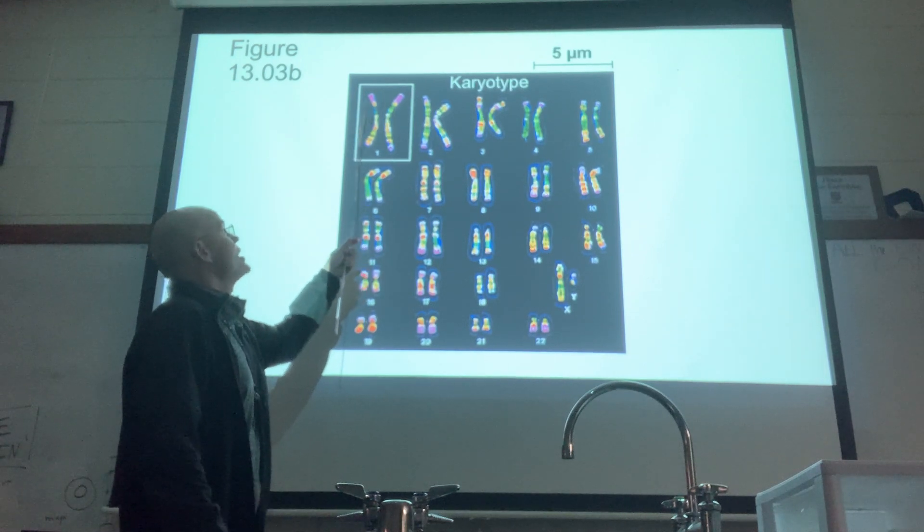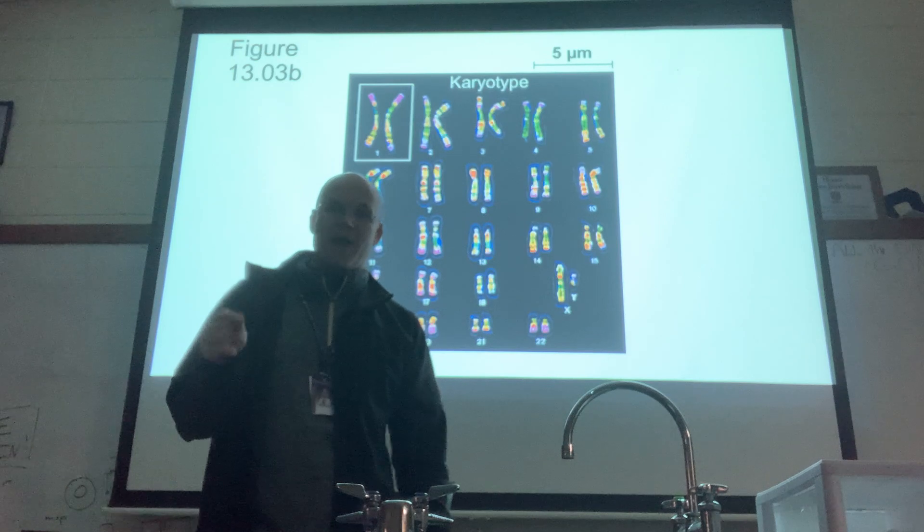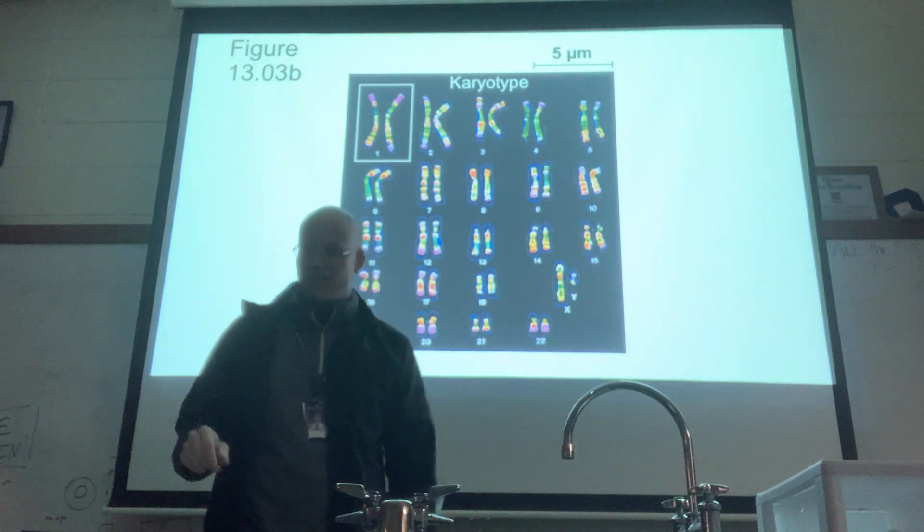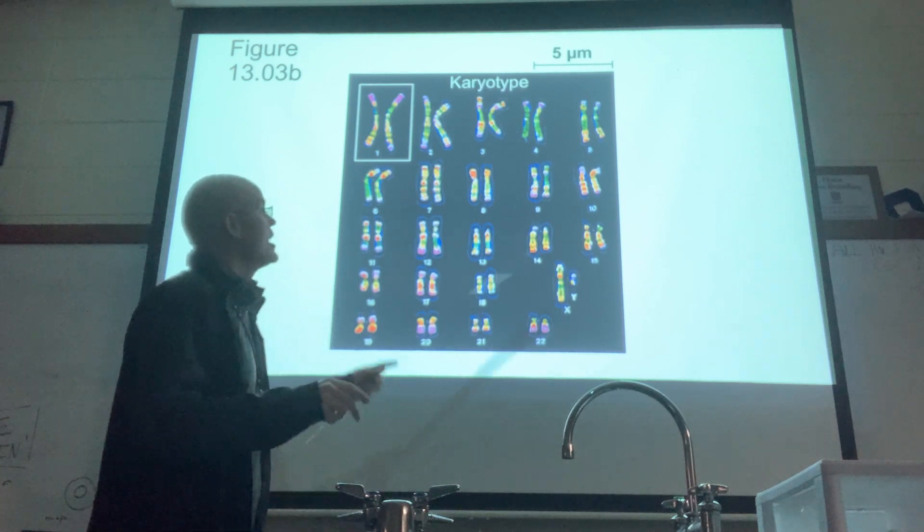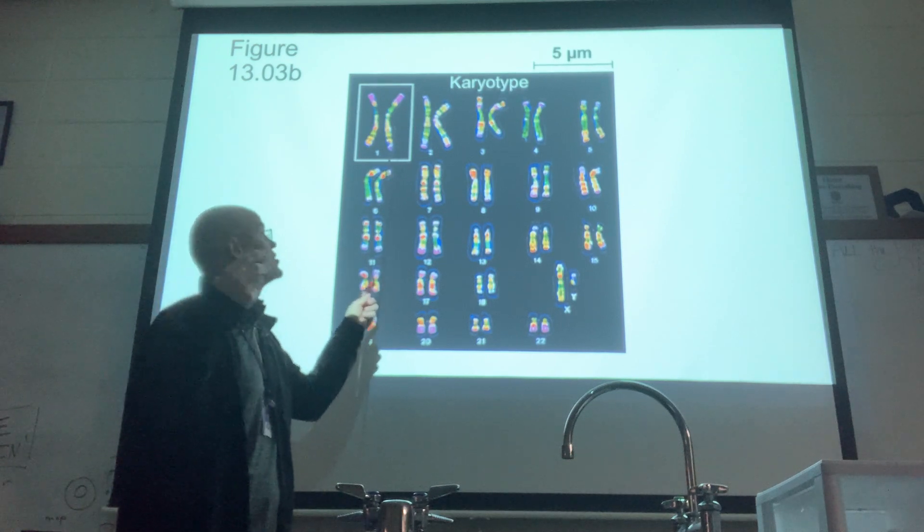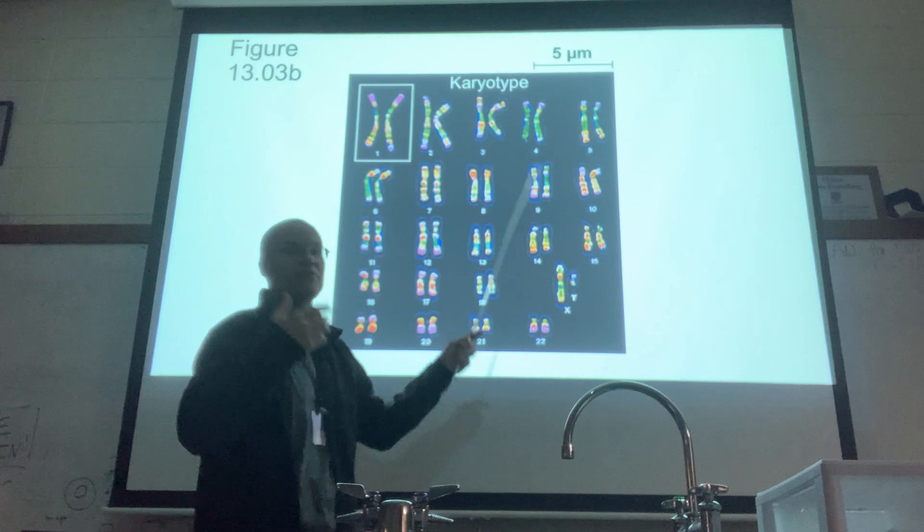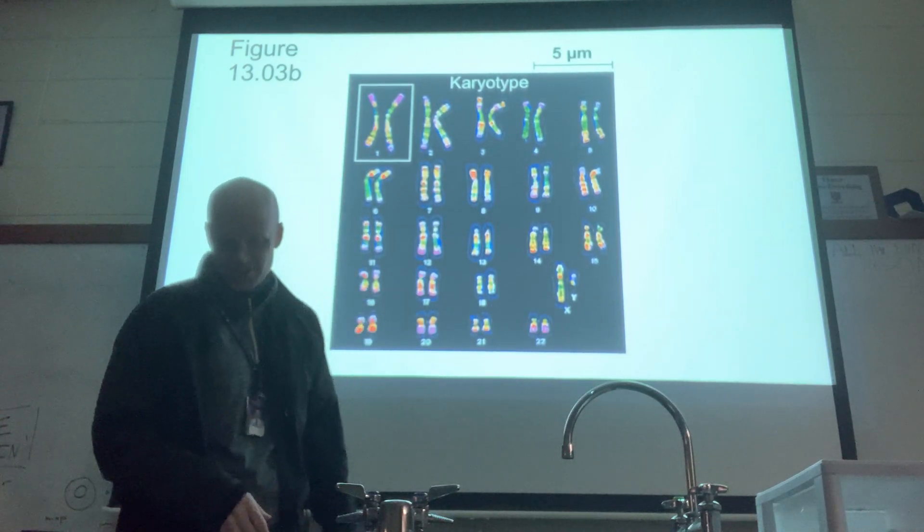You have matching pairs of chromosomes. We call matching pairs homologous pairs. One from the mother, one from the father. And this is why we use the term diploid, two sets. You have a mother and father chromosome for each of the different types of chromosomes you have for a total of 46.